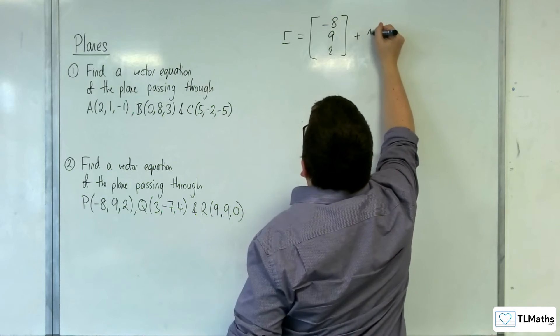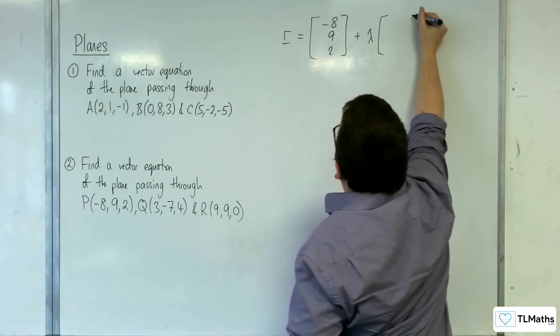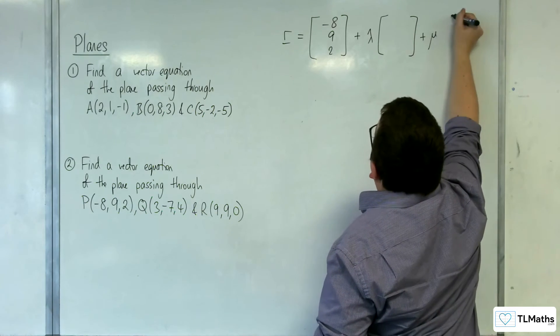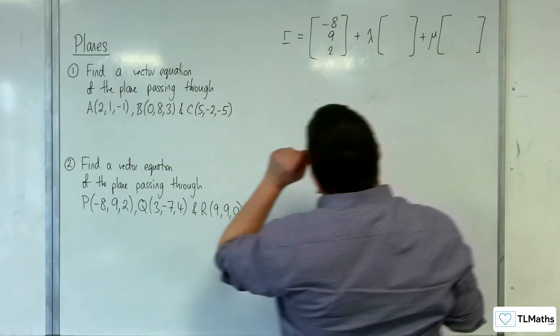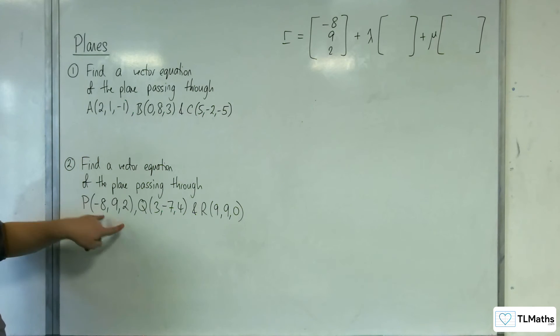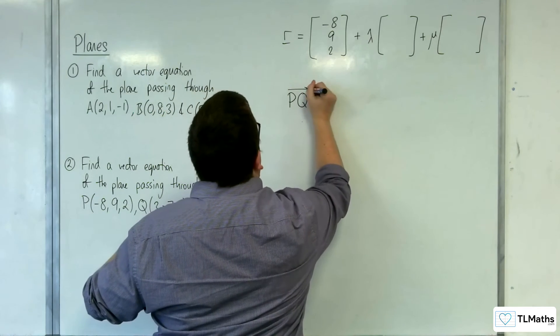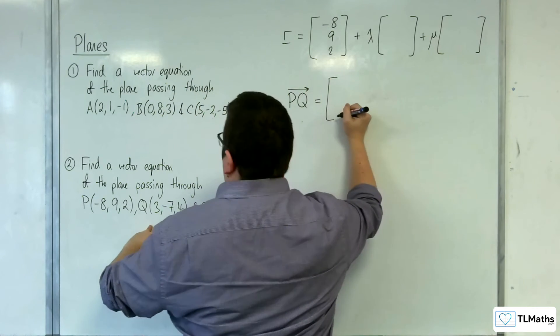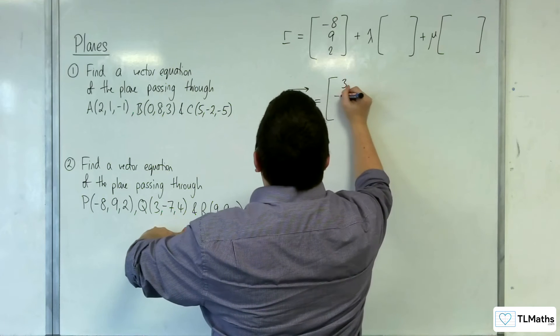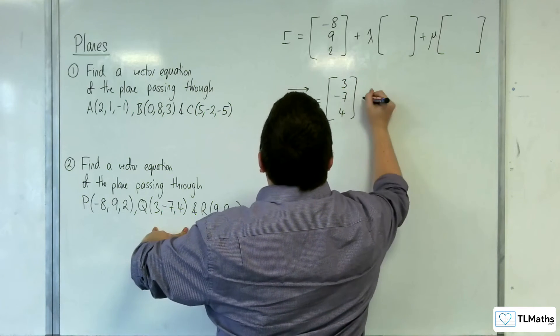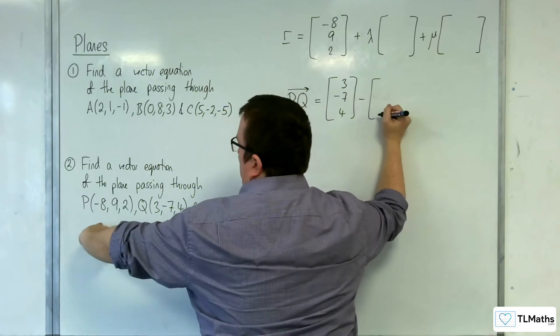And then I'm going to have lambda times one direction vector plus mu times another direction vector. So let's use PQ as one of the direction vectors. So that's Q, 3, minus 7, 4, take away OP, minus 8, 9, 2.